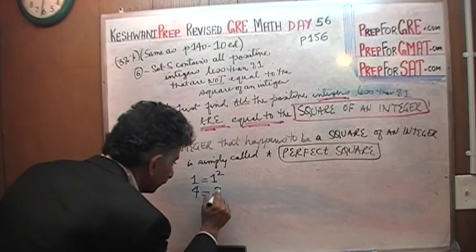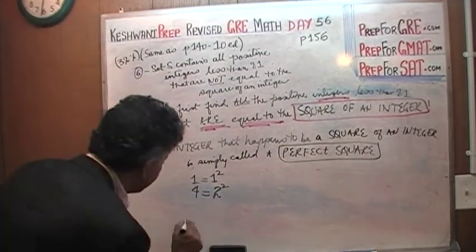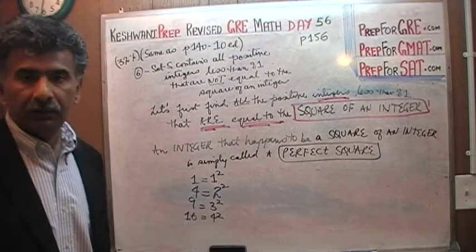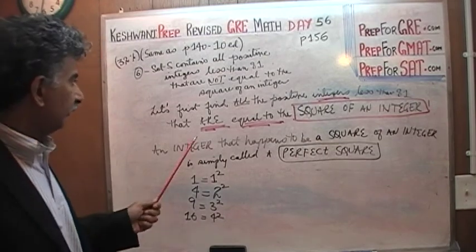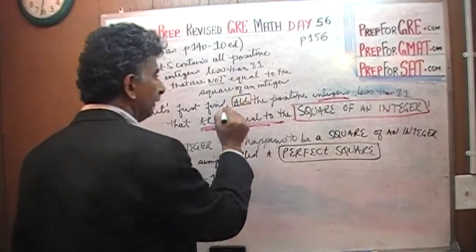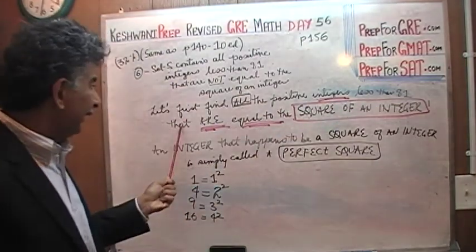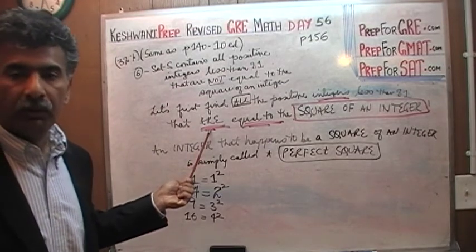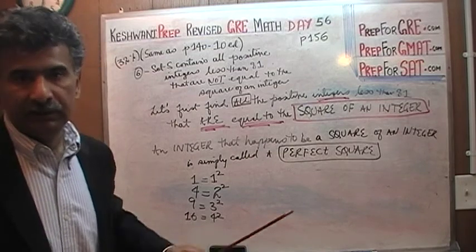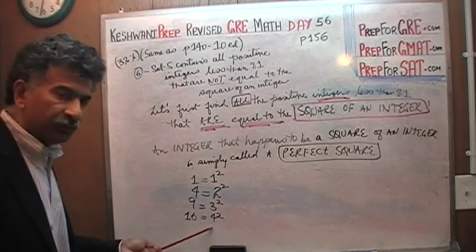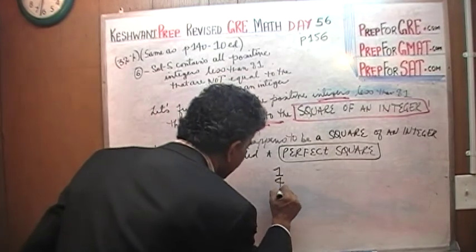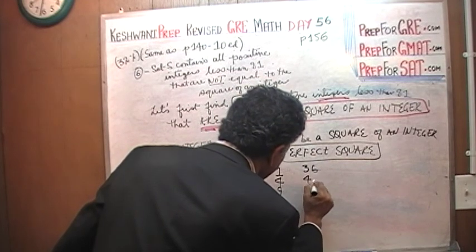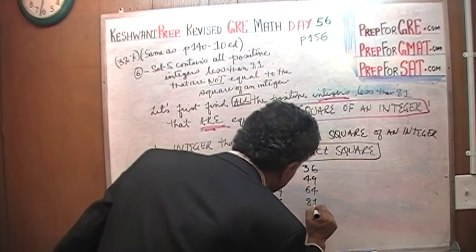4 equals 2 squared. 9 is a perfect square, 16 is a perfect square, and you get the idea. We are going to make a list of all the positive integers that are less than 81 and equal to the square of another integer — in other words, all the perfect squares less than 81. So we have: 1, 4, 9, 16, 25, 36, 49, 64, 81, and 100.